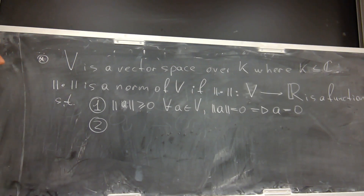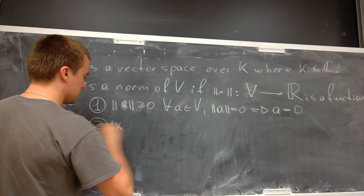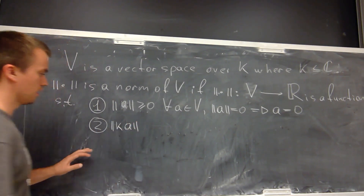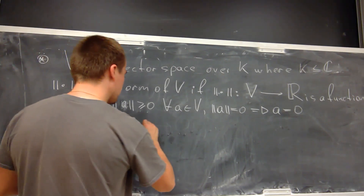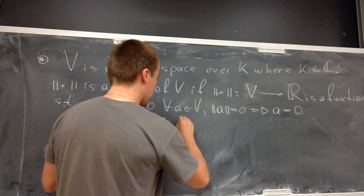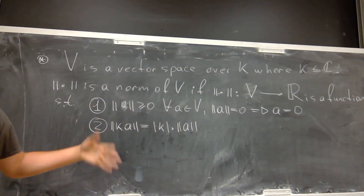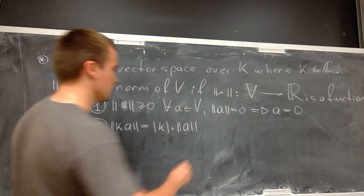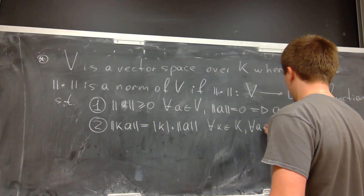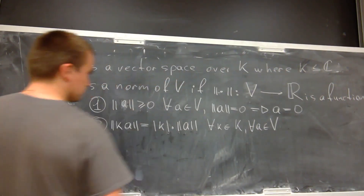The second property: if I take some constant from my coefficient field times some element of my vector space, that is going to equal the absolute value of this constant times the norm of the element. We want this property to hold for any k belonging to K and any A belonging to V.